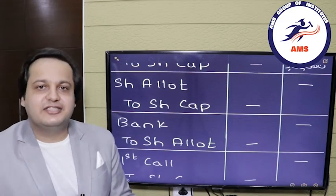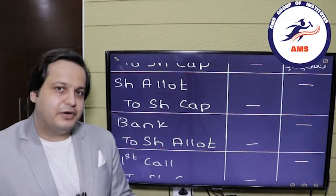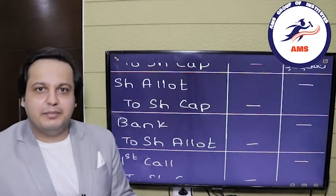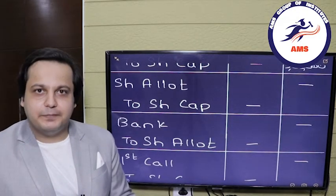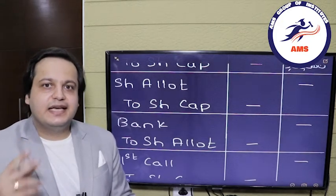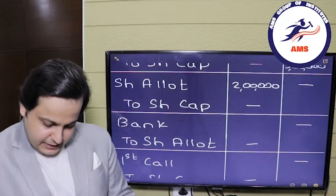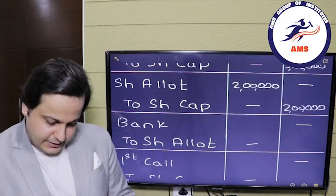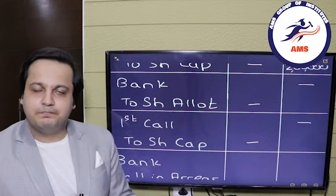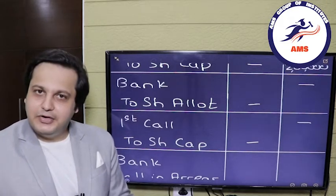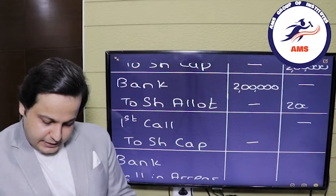Next we move towards share allotment. First we capitalize: share allotment account debit to share capital, amount 1 lakh shares × ₹2 = ₹2 lakhs. Share allotment debited by ₹2 lakhs and share capital credited by ₹2 lakhs. Since there is no default in the allotment, we receive the full amount. Bank account debit to share allotment: ₹2 lakhs. Bank debited by ₹2 lakhs and share allotment credited by ₹2 lakhs.